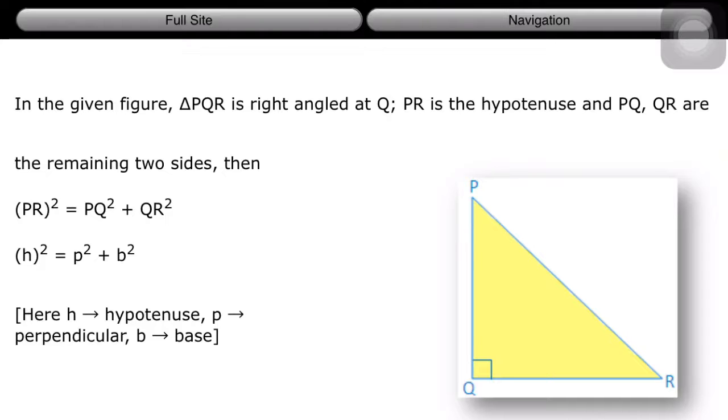Now, according to the Pythagoras theorem, in a right-angled triangle, the hypotenuse square will be equal to the sum of squares of the other two sides.